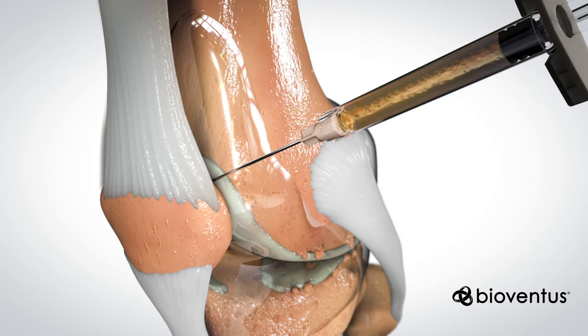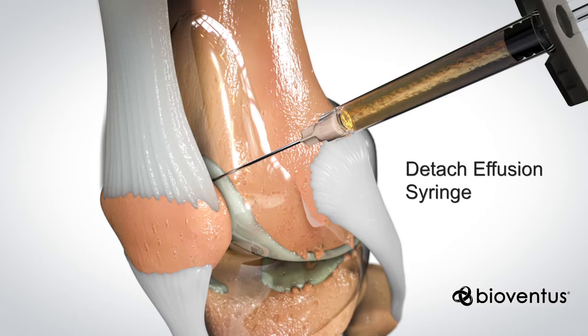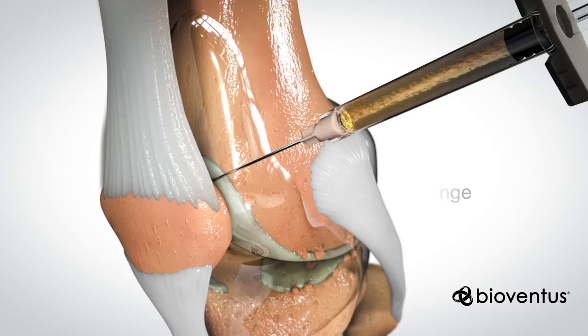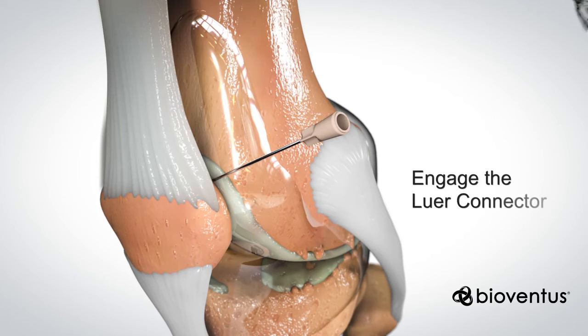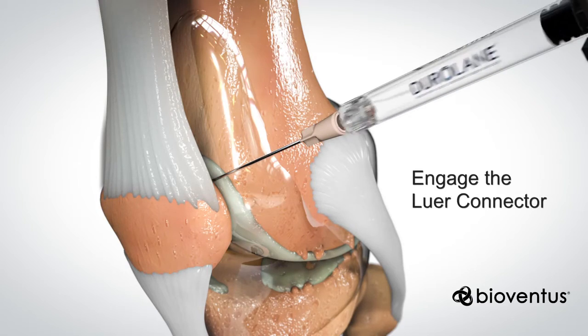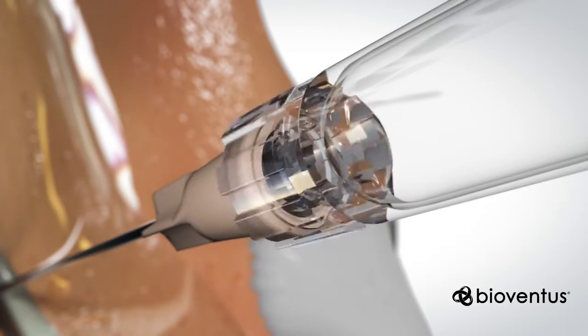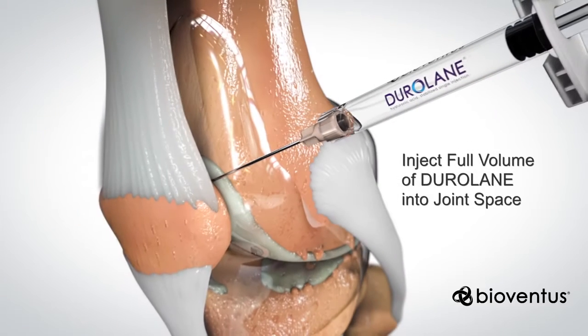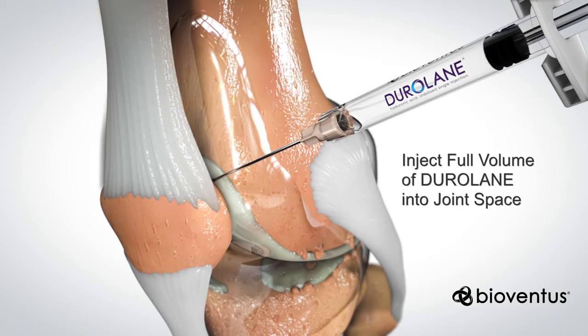After you aspirate the fluid, keep the needle in place while switching syringes. Twist to engage the needle with the luer connector on the duralane syringe. Then slowly inject the full volume of duralane in the syringe into the joint space.